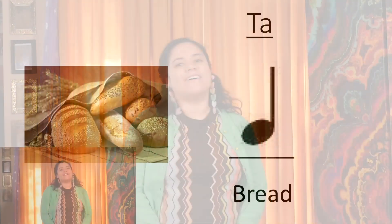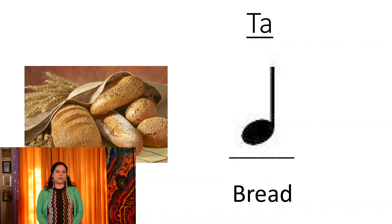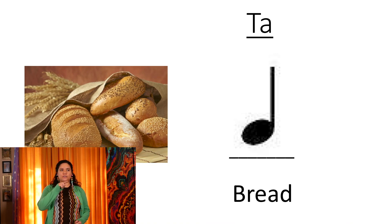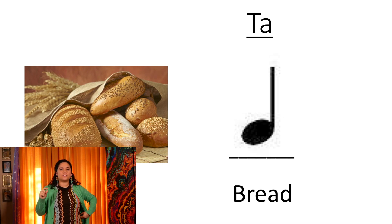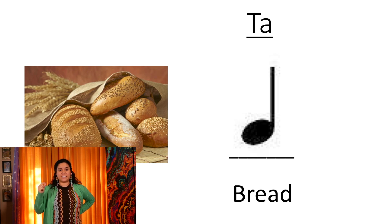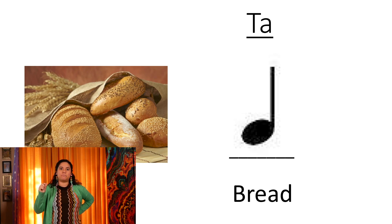Music rhythms are the music notes that tell us what to play. On the screen you will see our first music rhythm. Notice that it's a dark circle with a line standing up right next to it. There is also a long black line under it. We haven't added that before to our music notes, but for today's lesson we're gonna call that line underneath the music note a beat line.